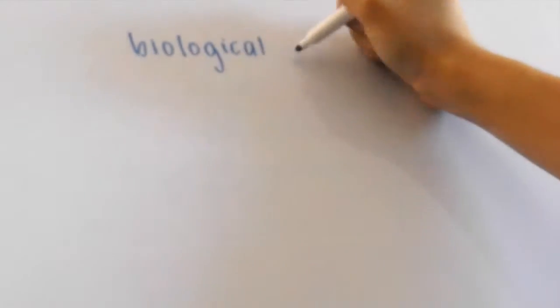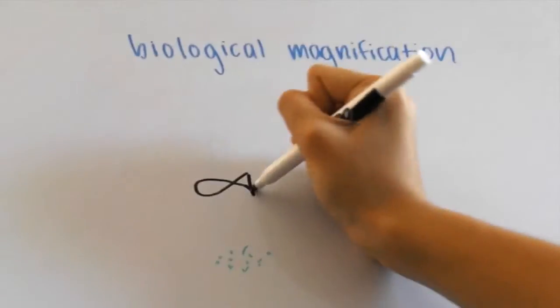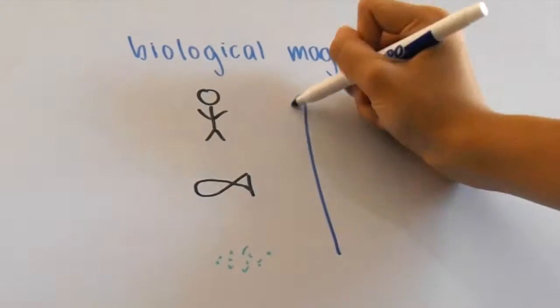So what biological magnification is, is the idea that organisms at higher levels at the food chain, or trophic levels, have greater concentrations of toxins in their bodies when compared to those at the bottom of the hierarchy.